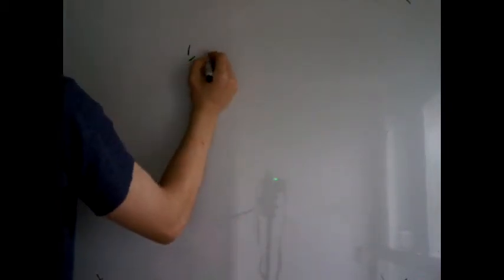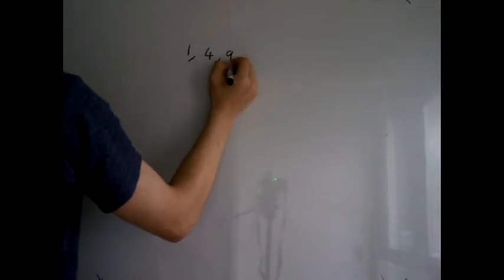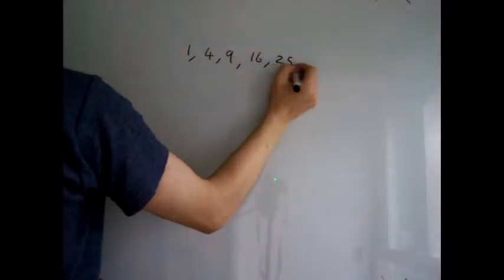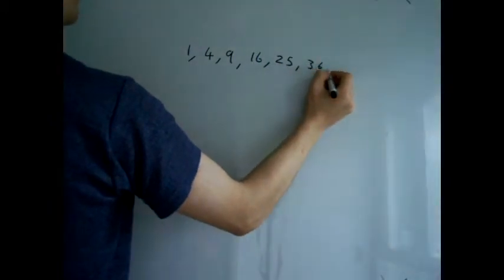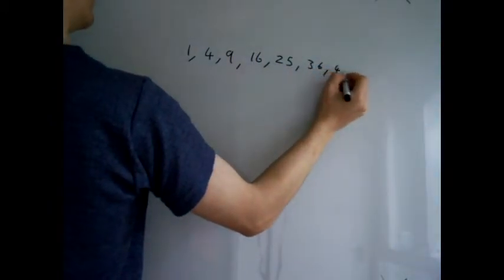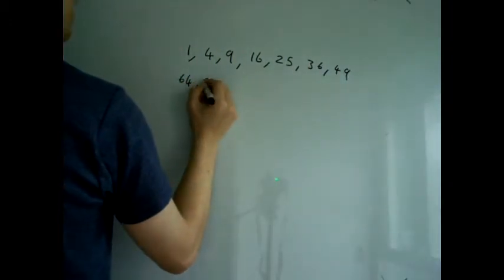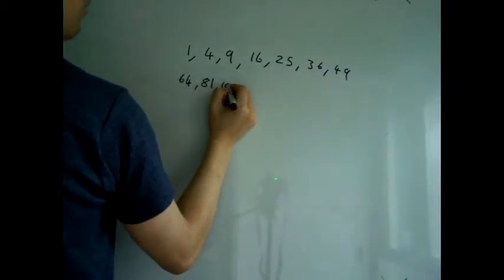A surd is any square root of a number which is not a perfect square. Perfect squares include numbers 1, 4, 9, 16, 25, 36, 49, 64, 81, and 100.